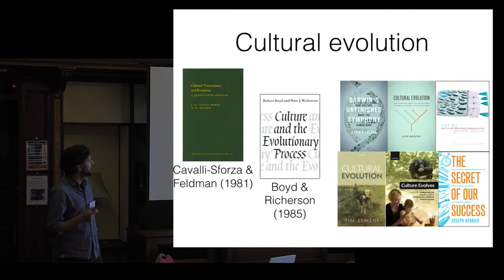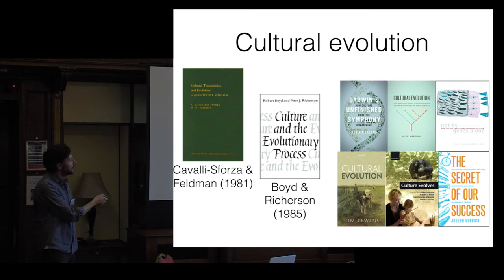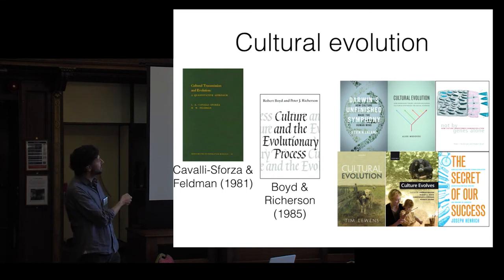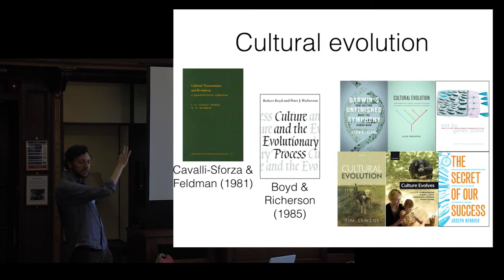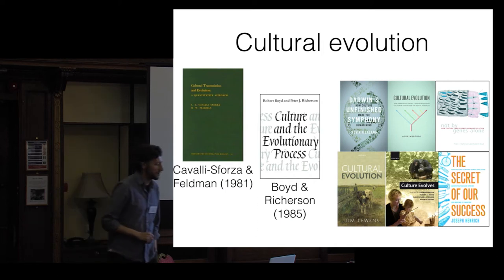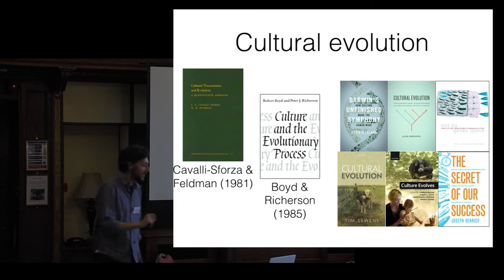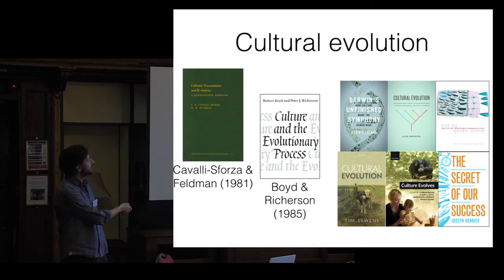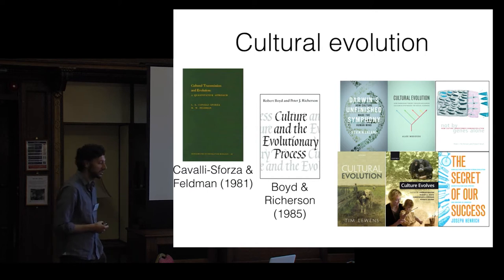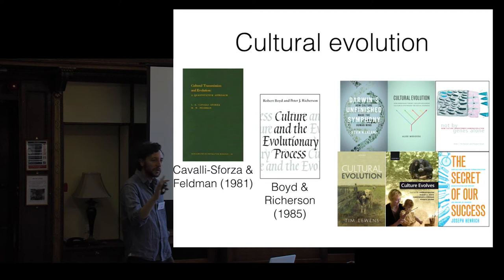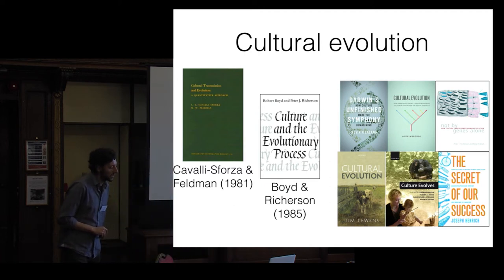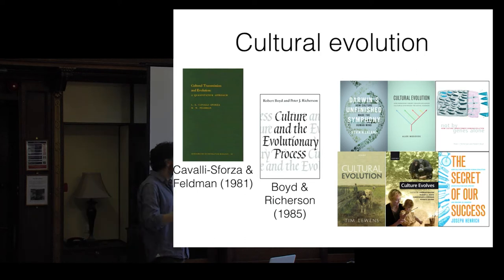There's been an explosion in cultural evolution research. Cavalli-Sforza and Feldman, and Boyd and Richardson, published two influential books laying out what I just presented in mathematical population genetic form. There have been quite a few books recently, and we've just formed a Cultural Evolution Society with around 1,700 members at our first conference in September, gaining traction across different disciplines.